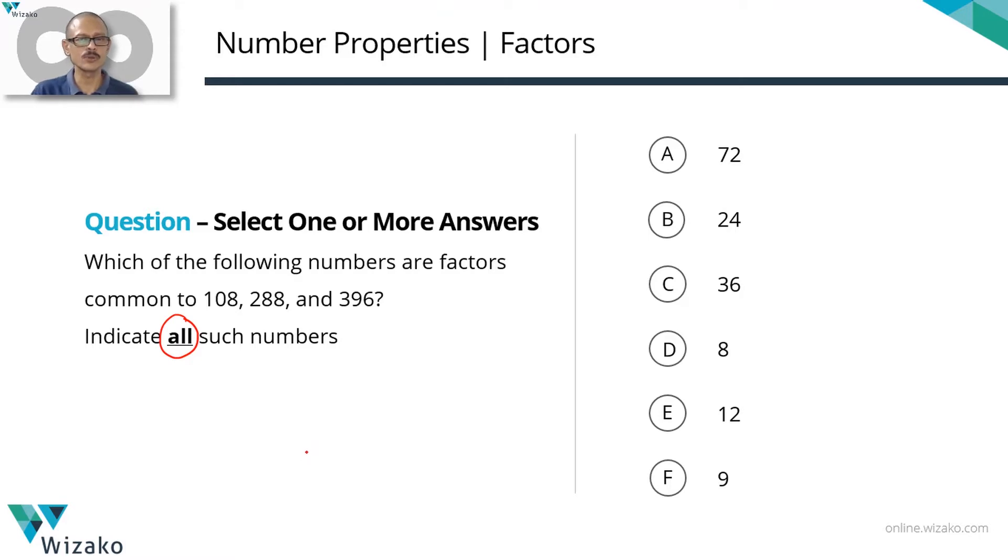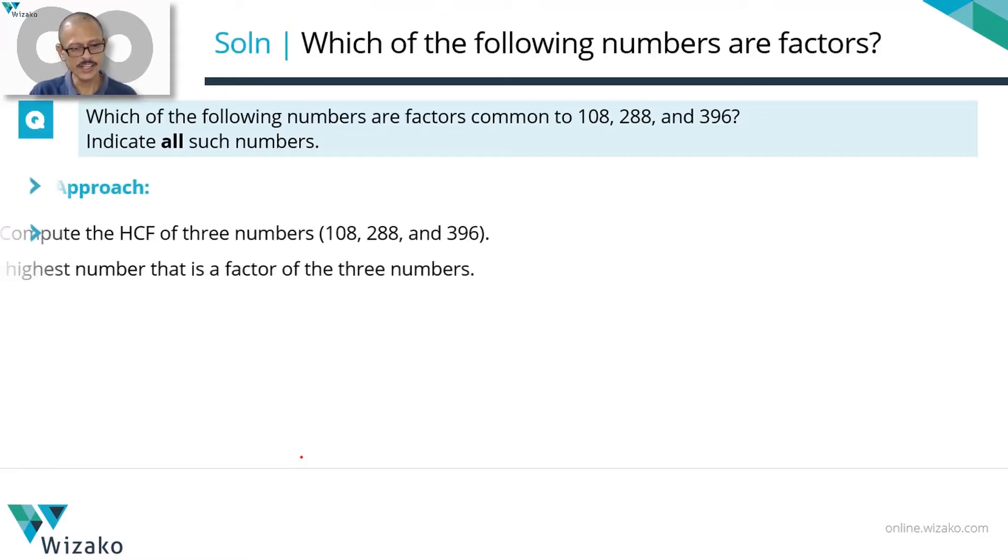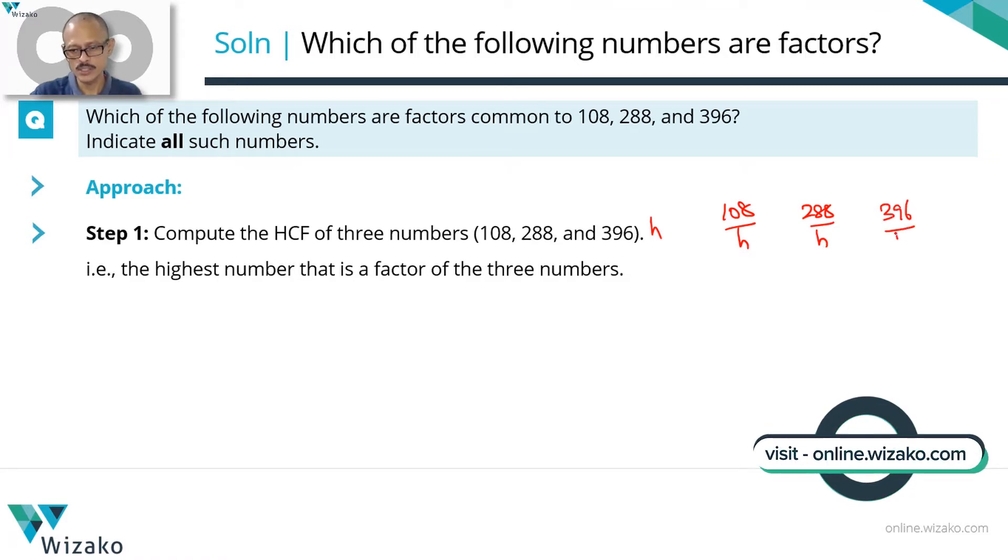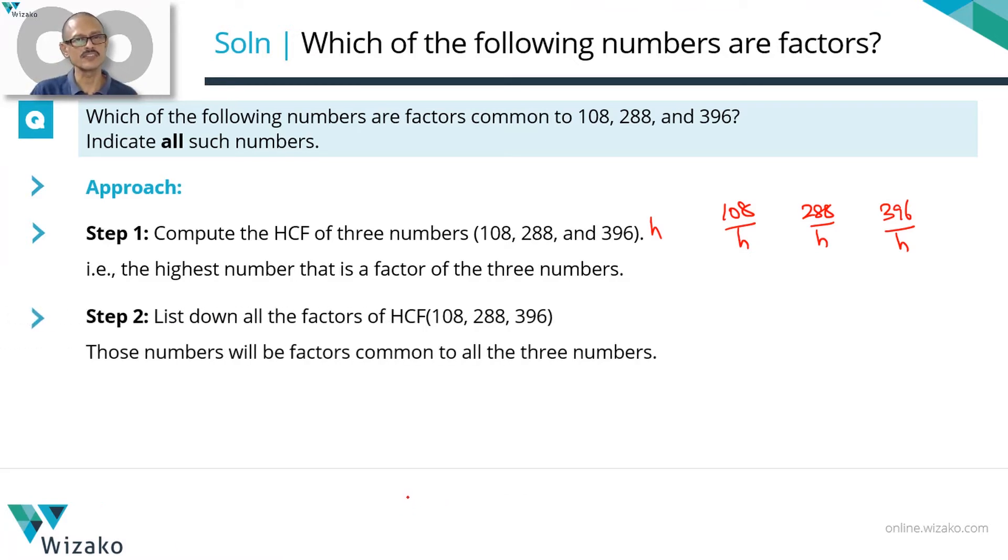Solving this using the theoretical approach entails two steps. The first step is we're going to compute the HCF of all these three numbers. We are not finding out all factors. We are finding out the highest factor that's common to all these three numbers. Let's say the HCF of these three numbers is H. So this H is going to divide 108, 288 is also divisible by H, and 396 is also divisible by H. Next. Second step is what is going to give us the answer. List all the factors of this HCF. That will give you the entire set of factors common to all these three numbers.